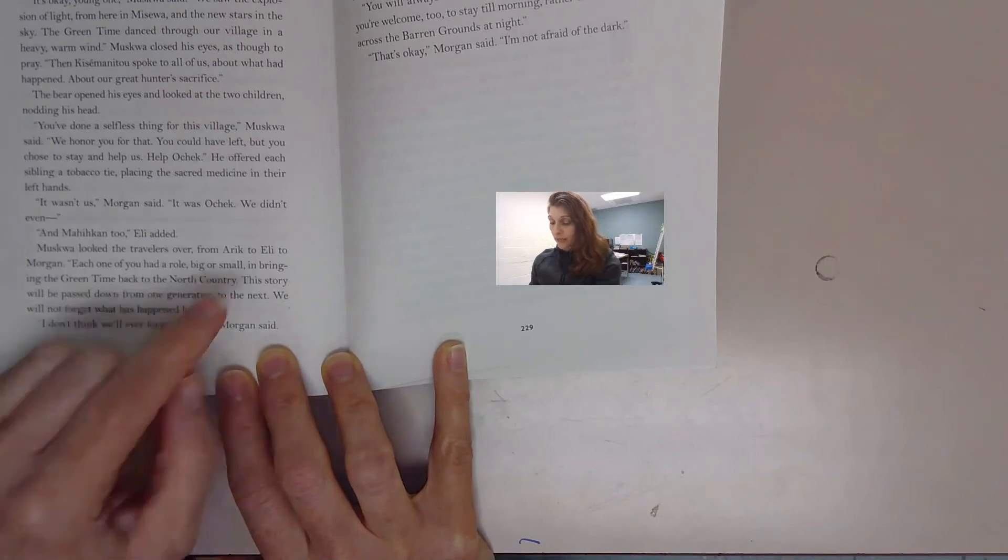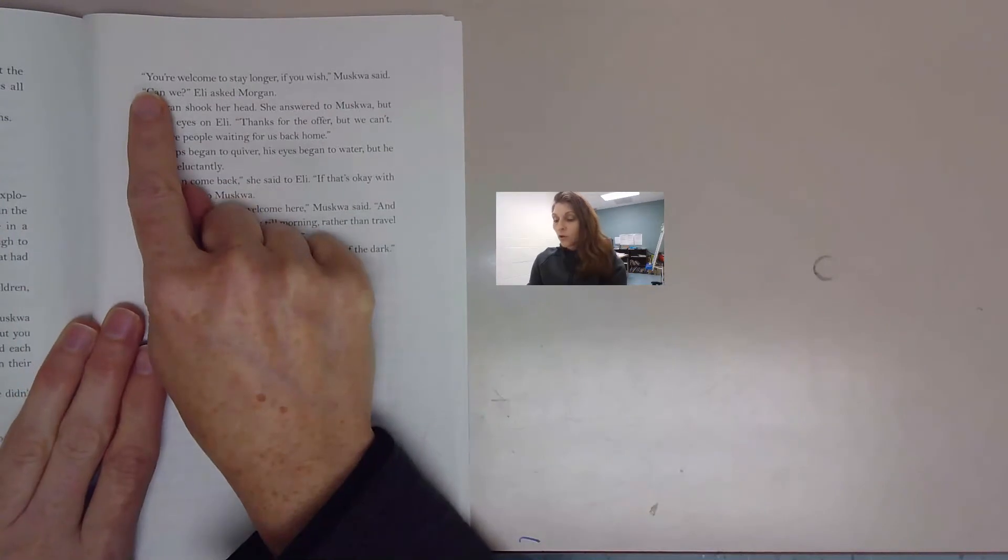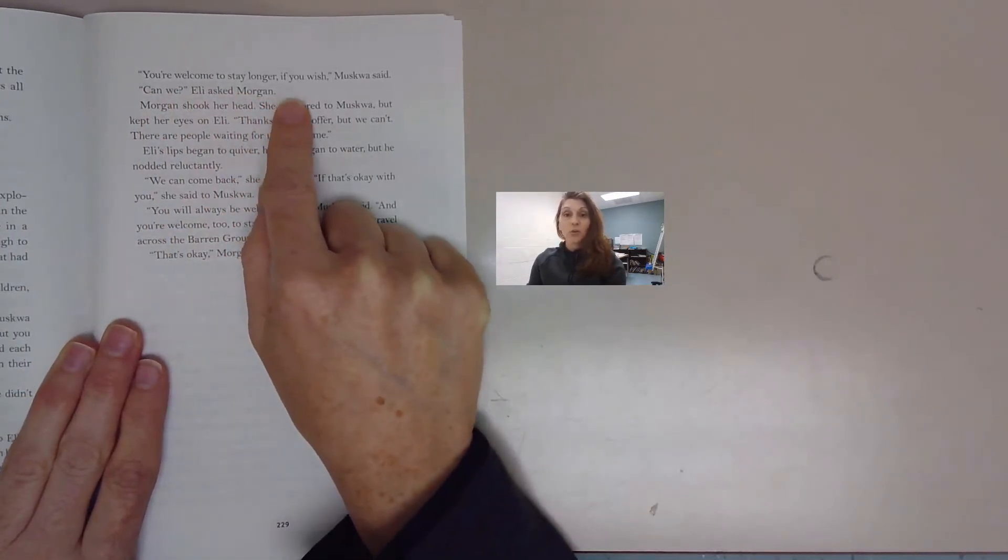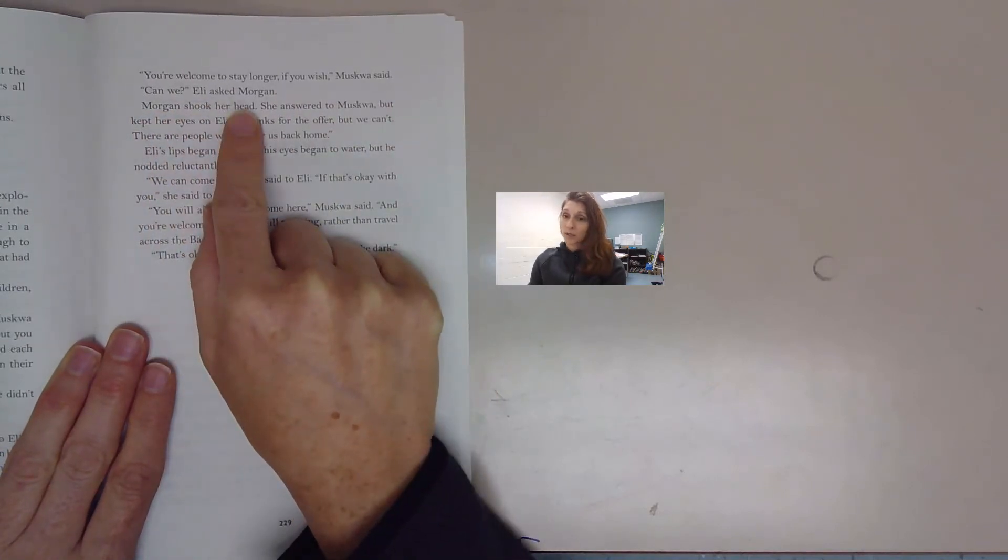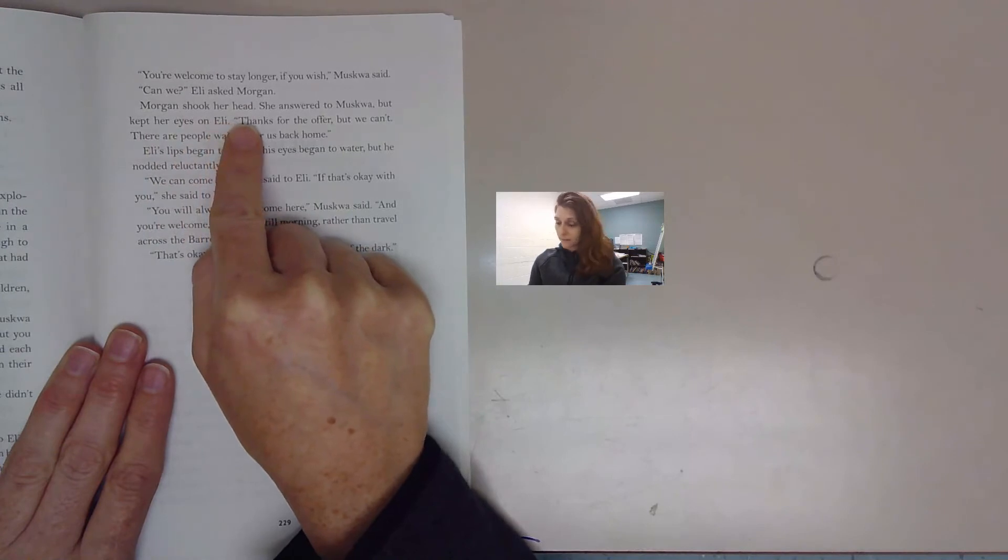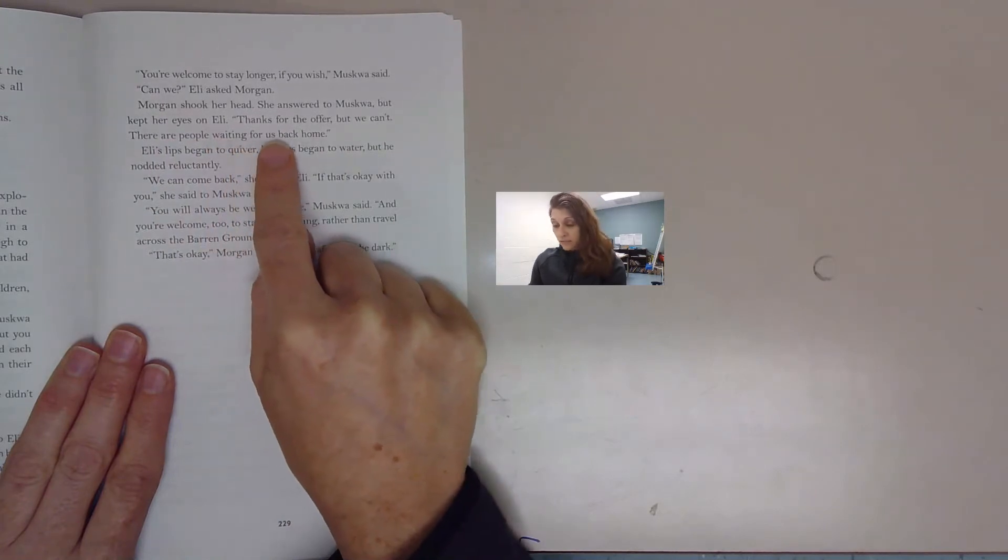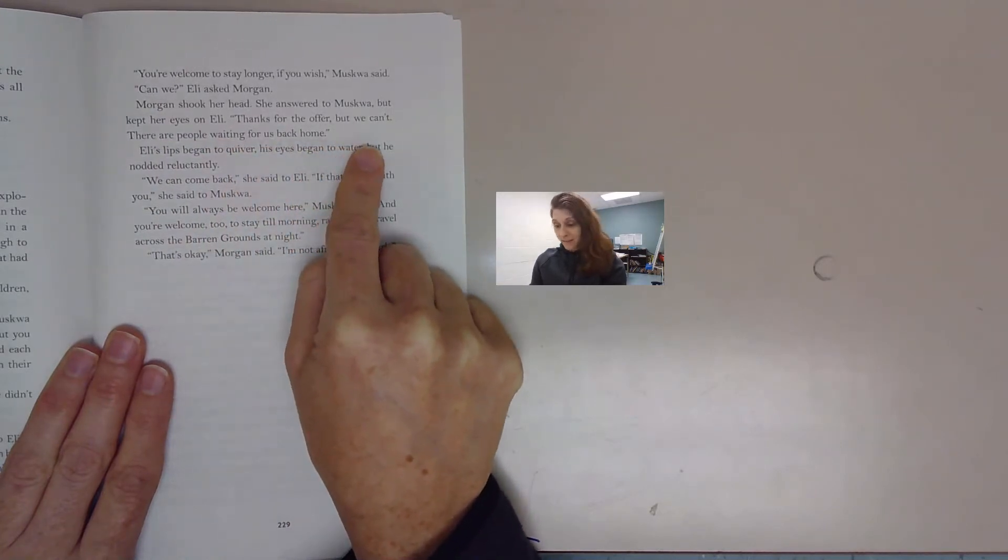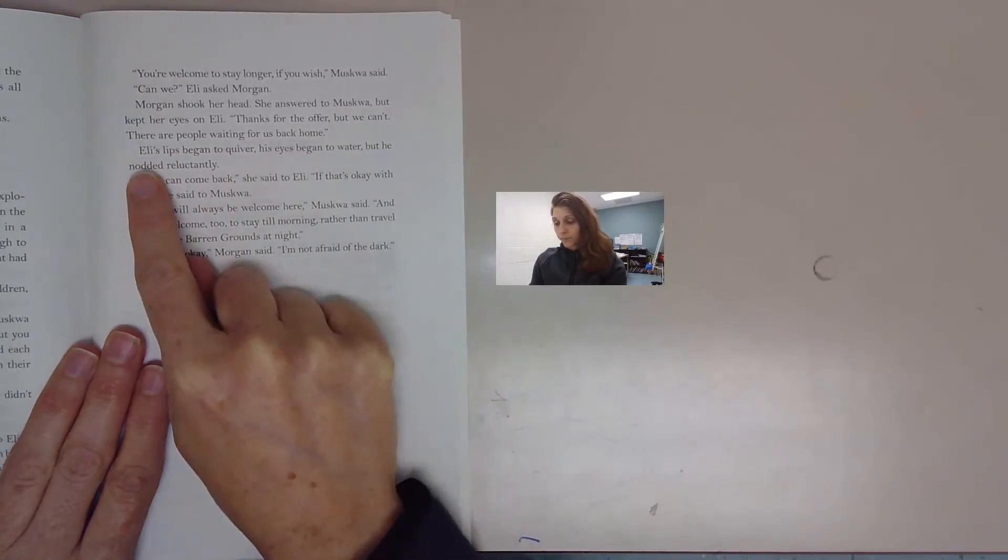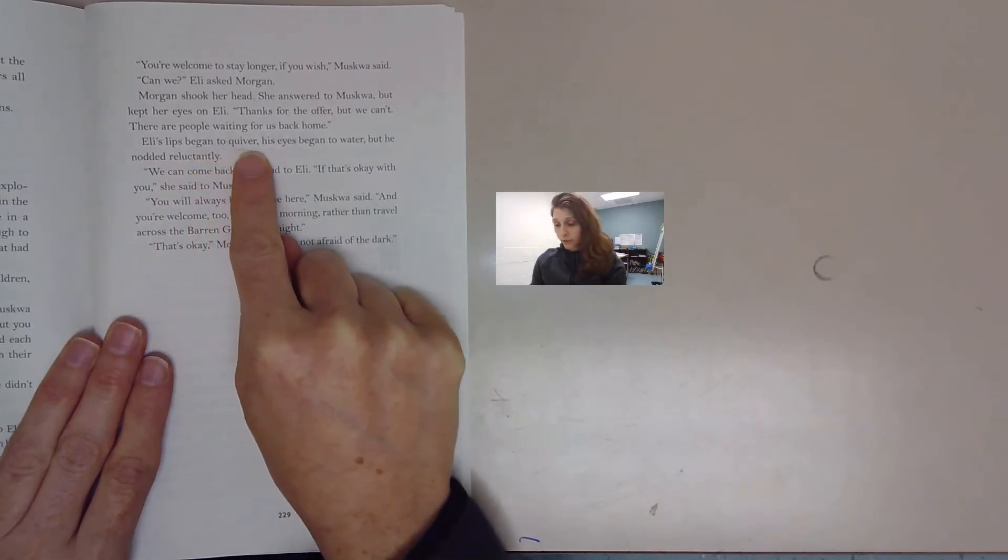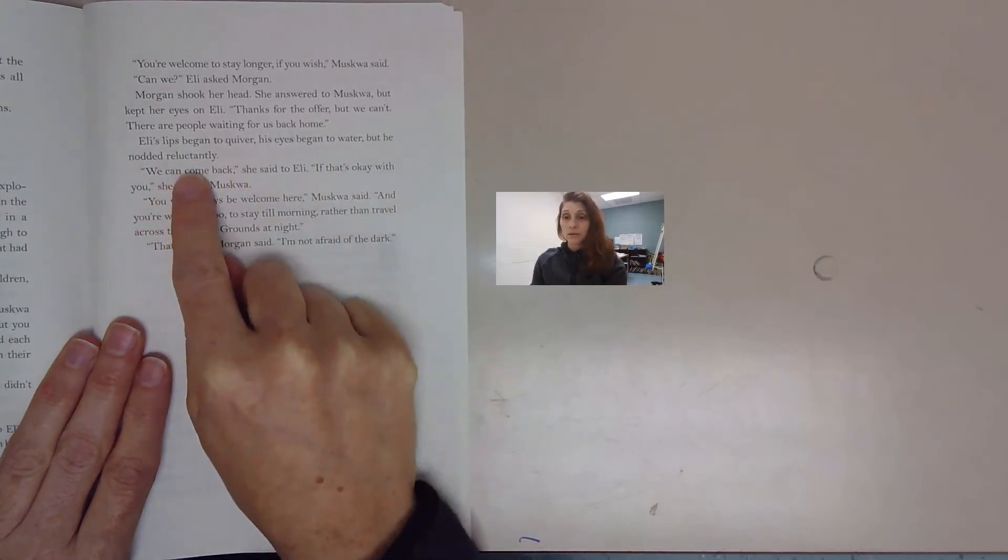I don't think we'll ever forget it either, Morgan said. You're welcome to stay longer if you wish, Muskwa said. Can we? Eli asked Morgan. Morgan shook her head. She answered to Muskwa, but kept her eyes on Eli. Thanks for the offer, but we can't. There are people waiting for us back home. Eli's lips began to quiver. His eyes began to water, but he nodded reluctantly.